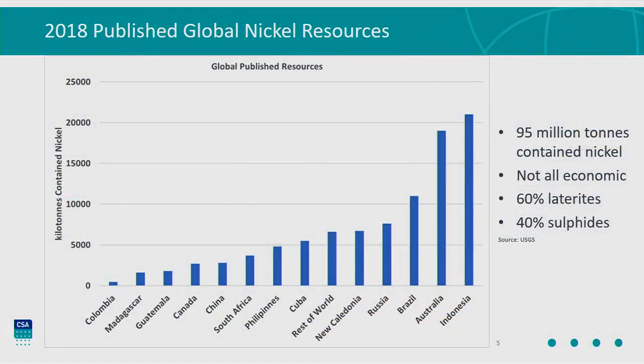So firstly, the sources of nickel. The USGS estimates that there's something like 95 million tonnes of contained nickel in resources around the world. A caution: that's not all economic — this includes everything from JORC-compliant proven reserves to numbers that are scribbled on the back of a beer mat. But of that, something like 60% of those resources are contained in laterite resources, and 40% are contained in sulphide nickel deposits. Some of the countries we typically associate with nickel are very heavily represented on that graph.